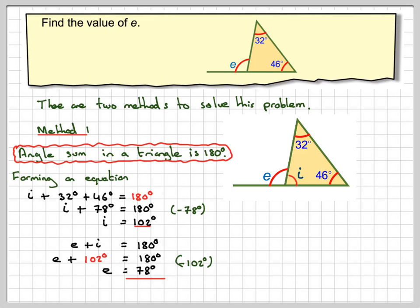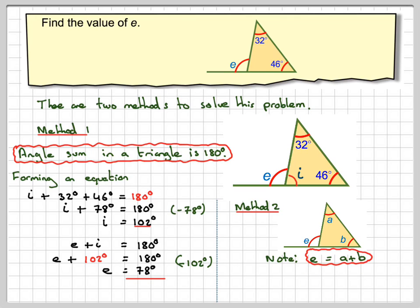Now that's one way of doing it. Now you might have noticed that if you actually add these two and these two together, you get 78. And that's always true for a triangle. So this is method two. Note, E will always be equal to A plus B in any triangle.